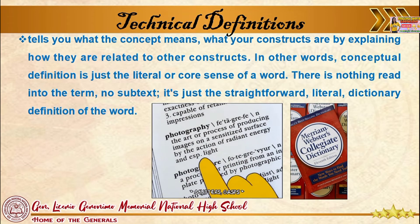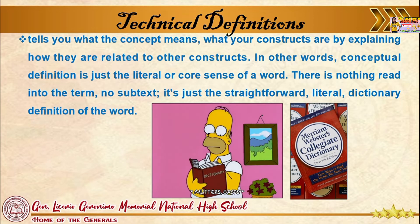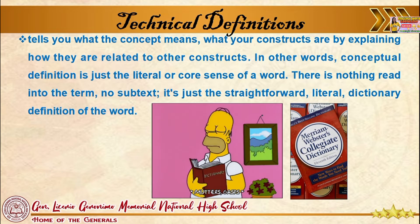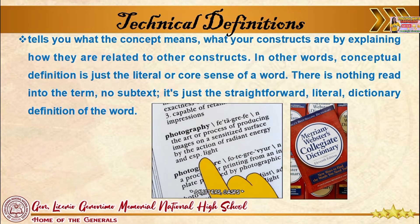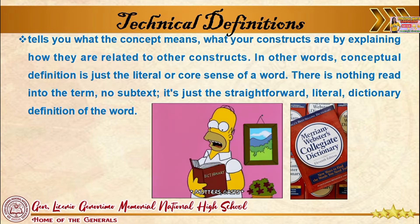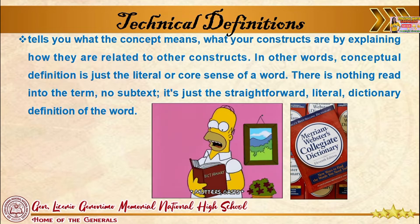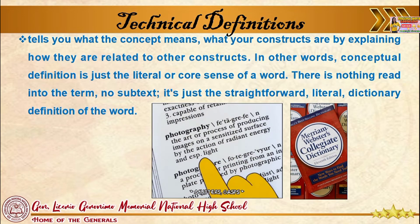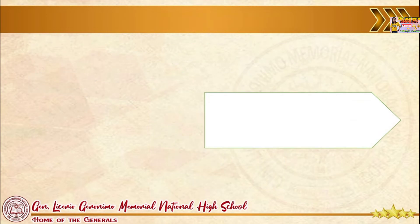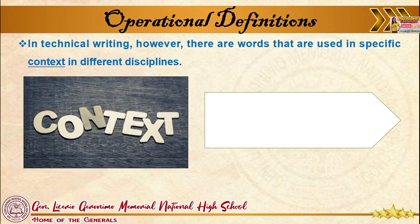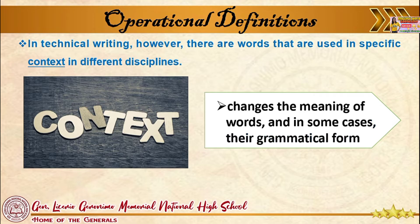A technical definition tells you what the concepts mean — what your constructs are — by explaining how they are related to other constructs. In other words, a conceptual definition is just the literal or core sense of a word. There is nothing read into the term, no subtext. It's just the straightforward, literal dictionary definition of the word. The Oxford Dictionary catalogs how English words have been used for the past 1,000 years and continues to be updated as new words and usages occur. However, a dictionary can only provide a literal definition and cannot show us what the word means in context. In technical writing, there are words used in specific contexts in different disciplines, and context can change the meaning and even the grammatical form of a word.